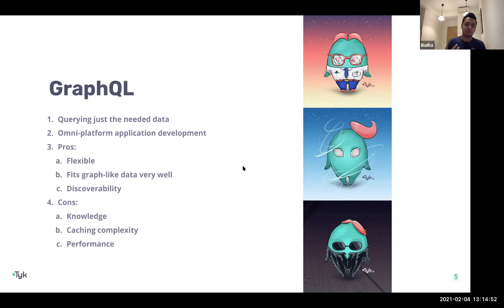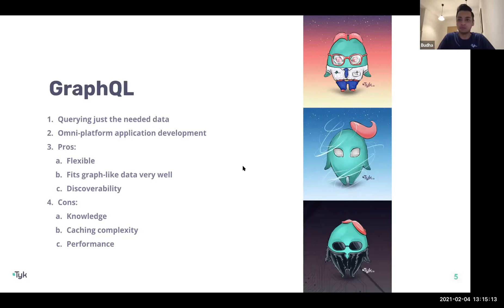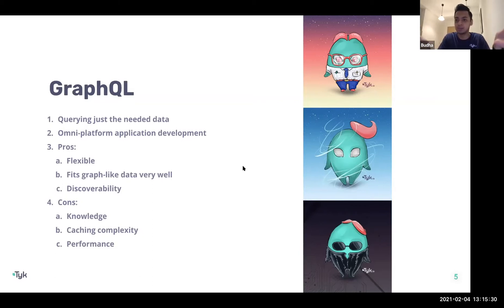GraphQL is basically a mechanism for querying exactly the data you need. It was born at Facebook — the reason they created it was to get the right kind of information for multiple applications across multiple devices. That's where REST was showing cracks: unless you were building very specifically for each device and endpoint, there wasn't a real easy way to fetch exactly what you needed for a specific use case.